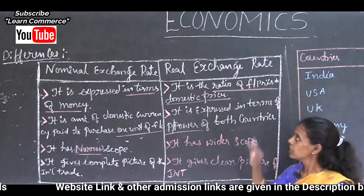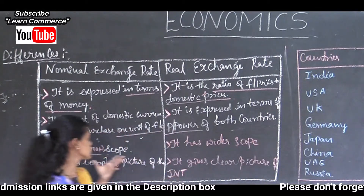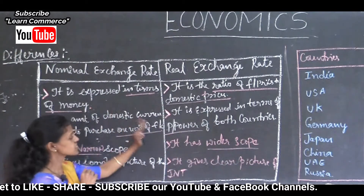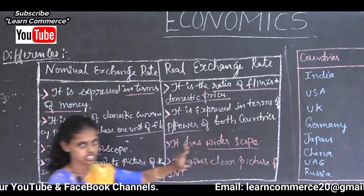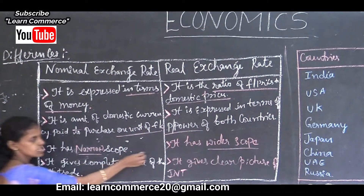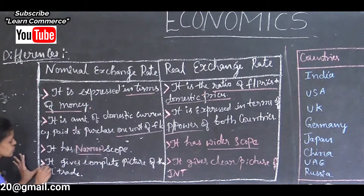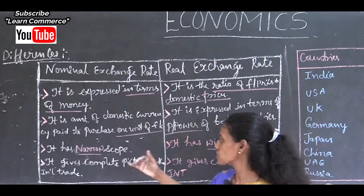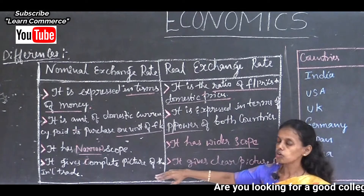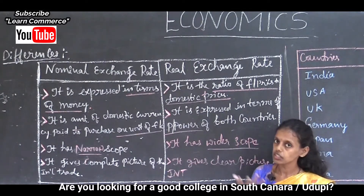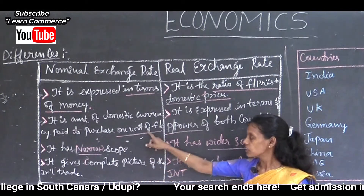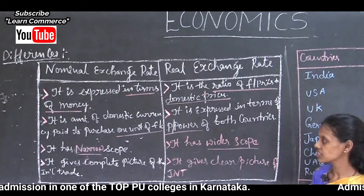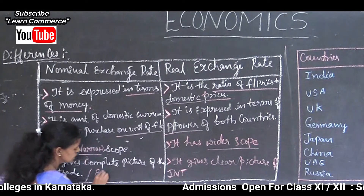The scope of nominal exchange rate is narrow and the scope of real exchange rate is wider. Nominal exchange rate gives the complete picture of international trade — how much our currency is paid to purchase one unit of foreign currency. By that it is easy to know the complete picture of international trade, which is nothing but external trade or foreign trade.